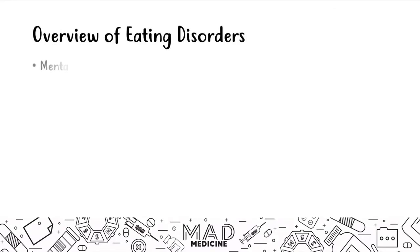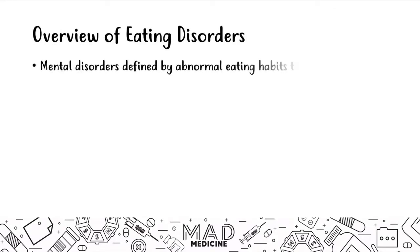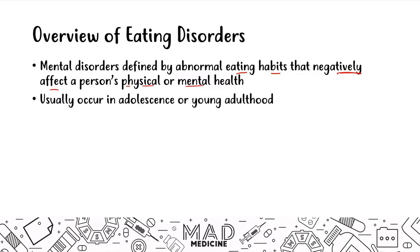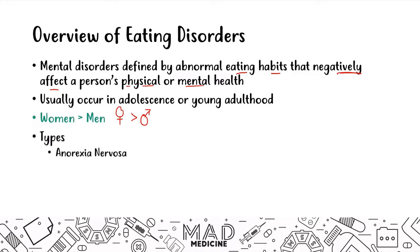Let's start with an overview of eating disorders. These are mental disorders defined by an abnormal eating habit that has a negative effect on a person's life both physically and mentally. This is a multifactorial disorder that usually occurs in adolescence or at a very young age, and it's more common in females than males. On USMLE Step 1, the vignette will often feature a female patient. There are four types we'll discuss: anorexia nervosa, bulimia nervosa, binge eating, and pica.